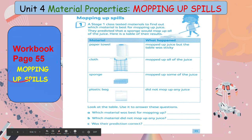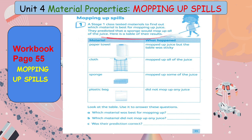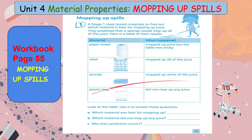In your workbook page 55, 'Mopping Up Spills' — a Stage 1 class tested materials to find out which material is best for mopping up juice. They predicted that a sponge would mop up all of the juice. Here is a table of the results, with different materials listed. For paper towel, it mopped up juice but the table was sticky. The cloth mopped up all of the juice. The sponge mopped up some of the juice. And the plastic bag did not mop up any juice.